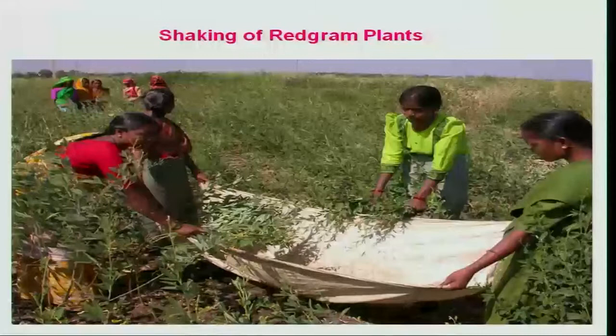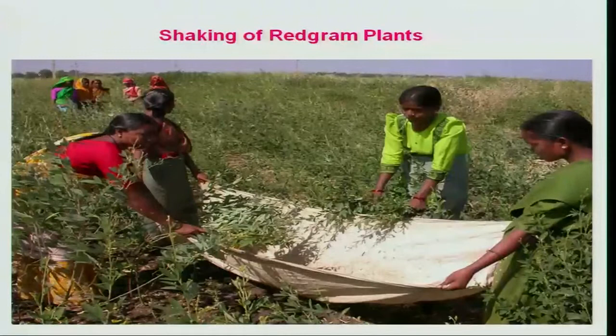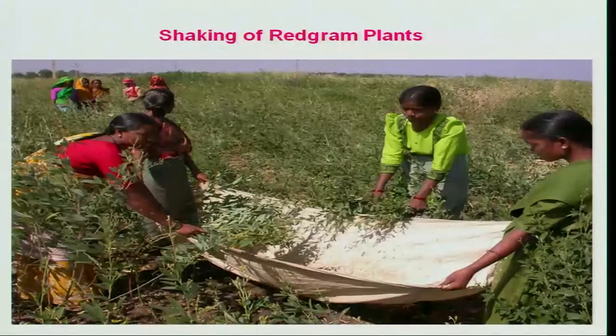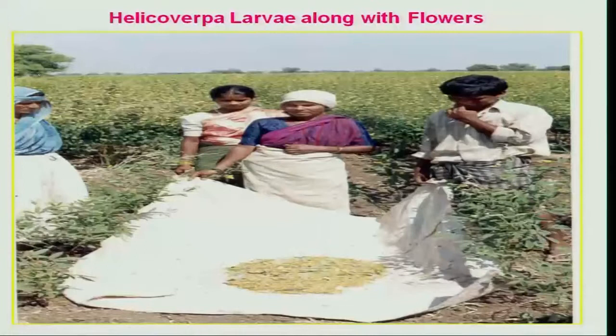Another technology used in redgram areas, particularly in rain-fed areas where Helicoverpa is a major pest, is that once pod development starts, Helicoverpa feeds directly on the developing pods. By shaking the plants onto a cotton cloth or a plastic sheet, then collecting them in one heap and destroying them manually, this is a very simple device followed by redgram farmers.